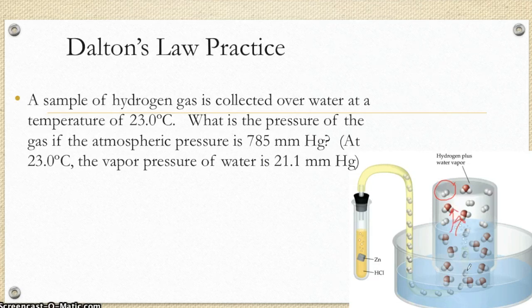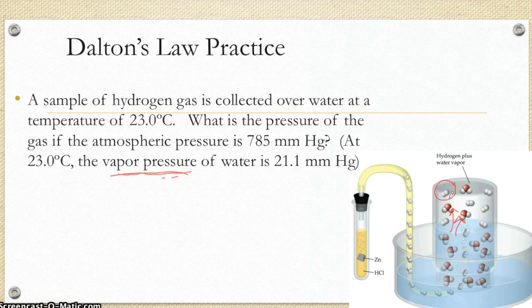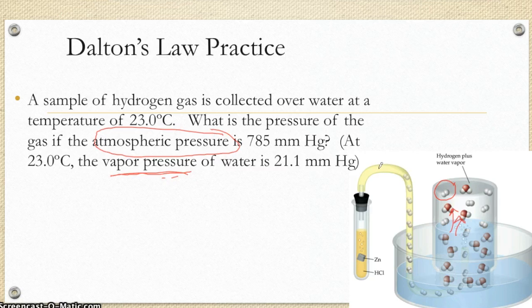So you're going to get some water molecules in there too. So the total pressure in that container is equal to the pressure of the water evaporating, which is called vapor pressure, plus the pressure of whatever gas we were trying to collect. And the way this lab is set up makes the total pressure in the container equal to atmospheric pressure.